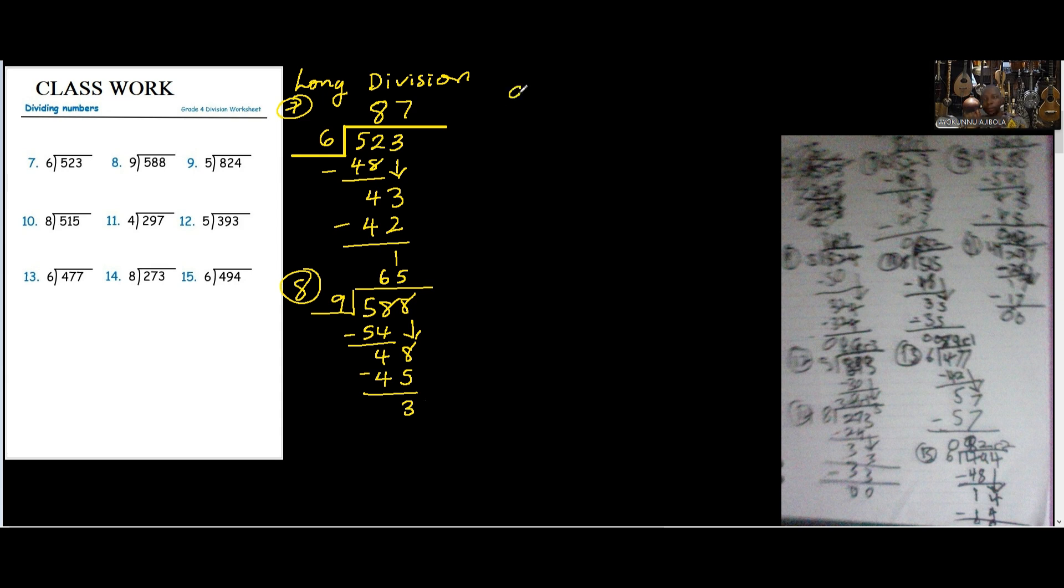Then number 9. We have 824. And number 9. Okay. I think we actually started the one which remained earlier. So, 5 and 8 is 1. 1 times 5 is 5. Then you subtract. You have 3. Then you drop down 2. 5, 32 is 6. Then 6 times 5 is 30. Then you subtract. You have 2. Then you drop down 3, 4. 5 and 24 is 4. And when you multiply, you have 20. Then you have remainder 4.